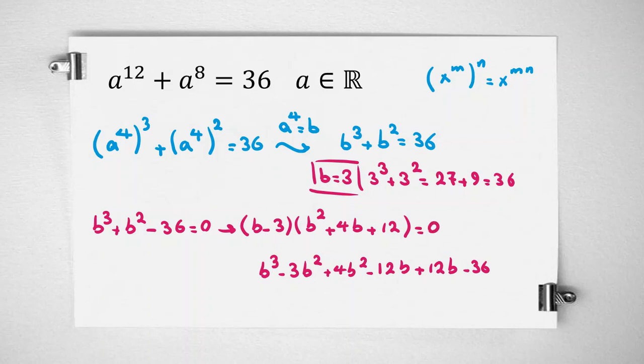Now product of two parts equal to zero. The first part is zero or second part is zero.